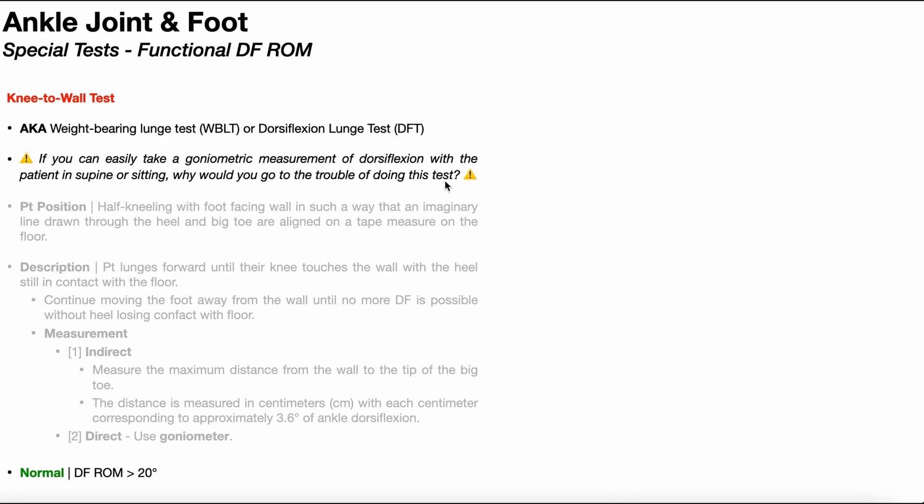We just mentioned that the knee-to-wall test measures functional dorsiflexion range of motion in the closed chain. But if you look at the typical measurement of dorsiflexion either in supine or sitting, that's in the open chain position. Now open chain dorsiflexion is more applicable for activities like gait or ascending stairs.